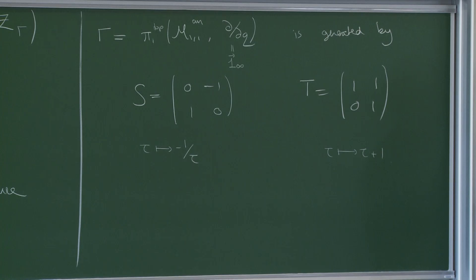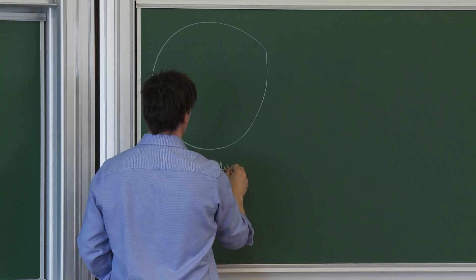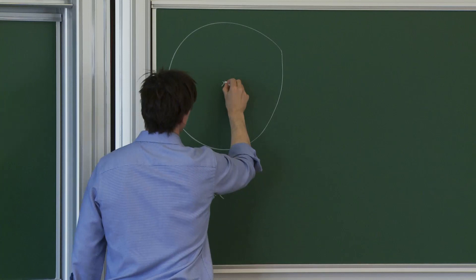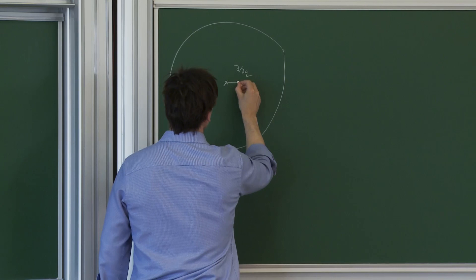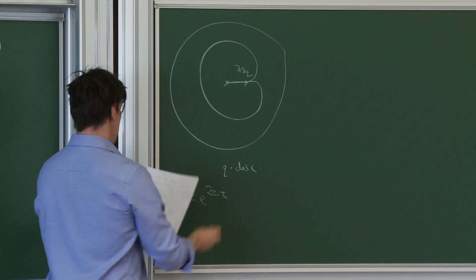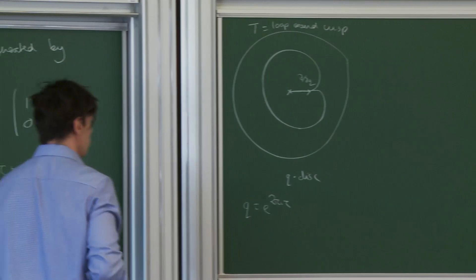For T, it all takes place in the q-disk. If this is a picture of the q-disk, I remind you that q equals e^{2πi tau}. Then it's punctured at the origin, and our base point was the tangent vector d/dq. The path T can be represented as a path that goes along this tangent vector, loops once in the positive direction around the origin, and then comes back along this tangent vector. So T is a loop around the cusp. T maps tau to tau plus 1, which corresponds to winding around the origin.